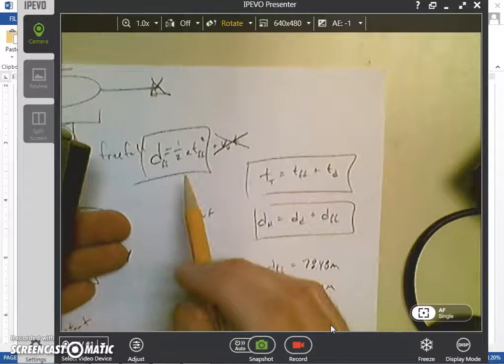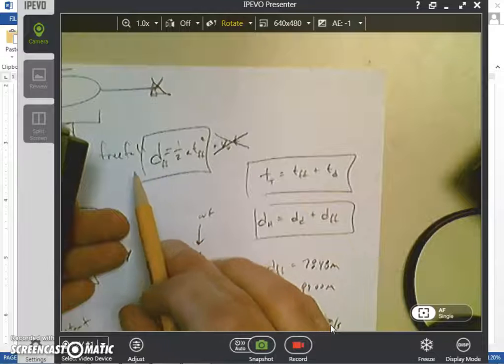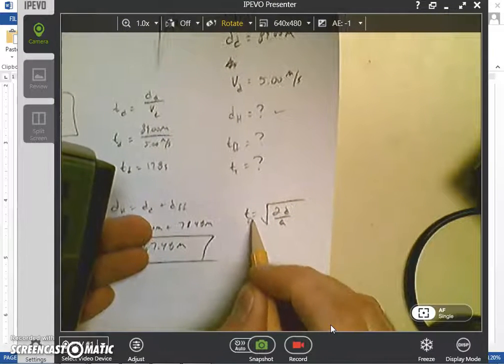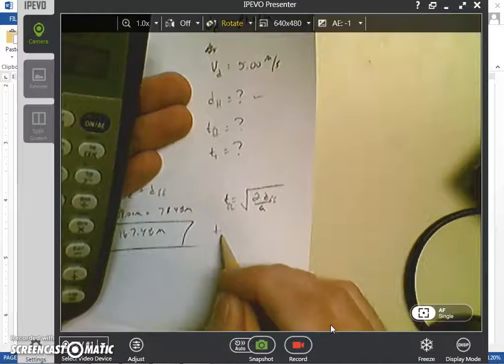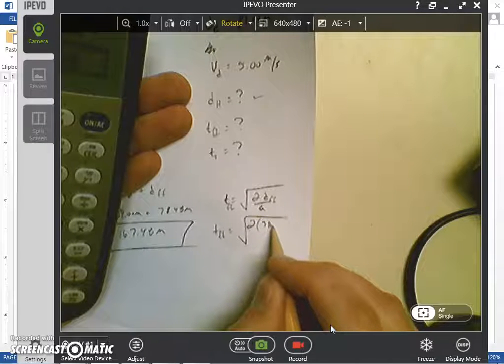So to solve for T there, T is equal to the square root of 2D over A. So again, I multiply both sides by 2, divide by A, and then take the square root. So I get 2D over A, and then take the square root of that. That is my freefall time, and I just need to know freefall distance.